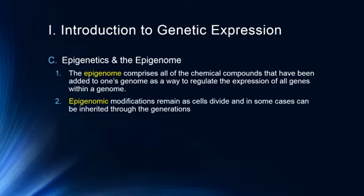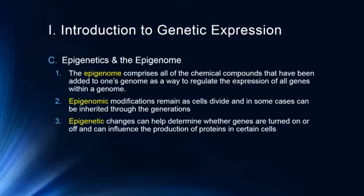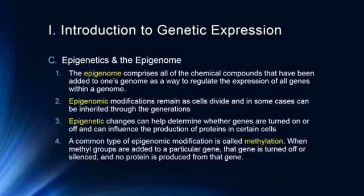Epigenomic modifications remain as cells divide and in some cases can be inherited through the generations. The alterations caused to a genome in one generation can influence the behavior of the next generation. We're just at the very beginnings of understanding this process, but it's really important that we get a handle on some things in order to understand what's happening with the next generation. Epigenetic changes can help determine whether genes are turned on or off and can influence the production of proteins in certain cells.